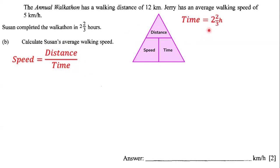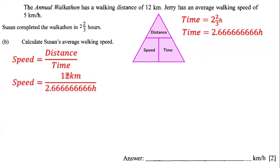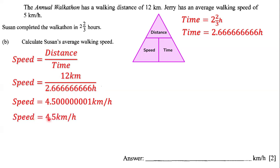First, we're going to take 2 and 2 over 3 and express it as a decimal. So 2 and 2 over 3 is approximately 2.6666 repeating. We use this decimal because it's easier to perform the calculations. So we have the distance, which is 12 kilometers, divided by the time, which is 2.666 repeating. When we divide these two, we get 4.5 kilometers per hour, expressed to one decimal place.